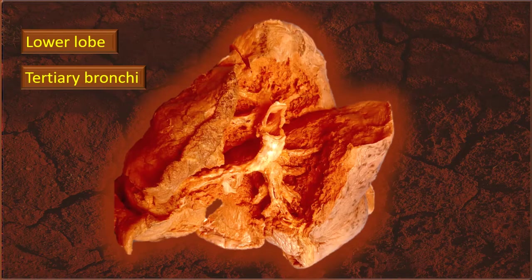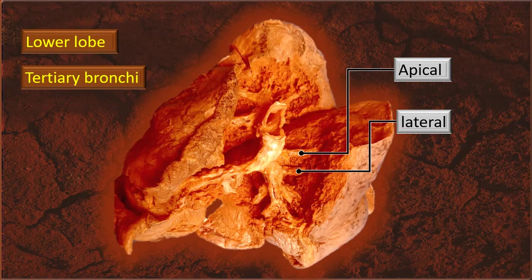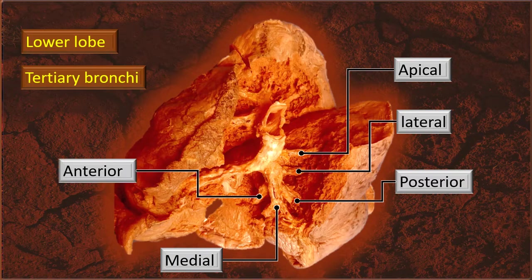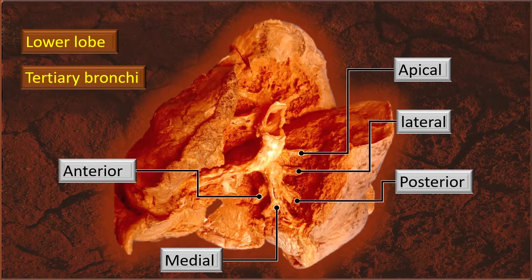Now, lower lobe details. The dissection has been extended and the lower lobe tertiary bronchi have been dissected out. The lower lobe is divided into one apical and four basal segments — lateral basal, posterior basal, medial basal, and anterior basal. That is: apical, lateral basal, posterior basal, medial basal, anterior basal.